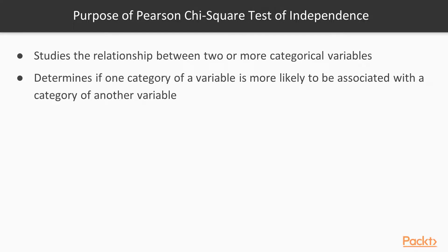The chi-square test of independence studies the relationship between two or more categorical variables — typically two. For example, we may look at the relationship between customer type and whether or not someone purchased a product. The test determines if one category of a variable is more likely to be associated with a category of another variable — for instance, whether customer type A is more likely to purchase product A than customer type B, or whether females are less likely to purchase product A than males.